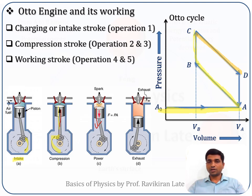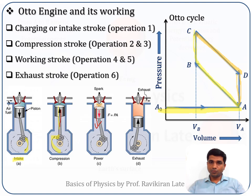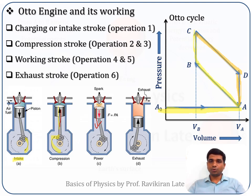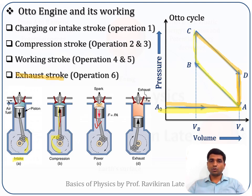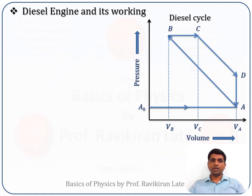After the power stroke, the volume decreases and unused gases are rejected to the sink — heat is rejected during this process. In the final exhaust stroke from A to A-naught, the unused gases are expelled and the cycle returns to its original position, completing the six operations of the Otto engine.